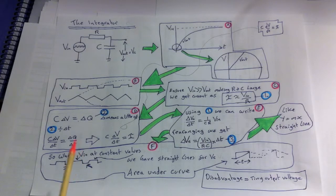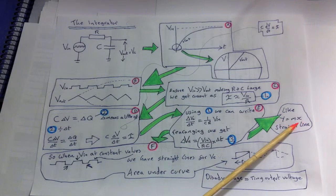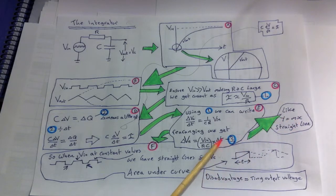This is in the form of Y equals Mx, a straight line plot where X equals T and M would equal Vin over RC. So it's very much like Y equals Mx here where this X is equal to the T and the M is equal to the Vin over RC.